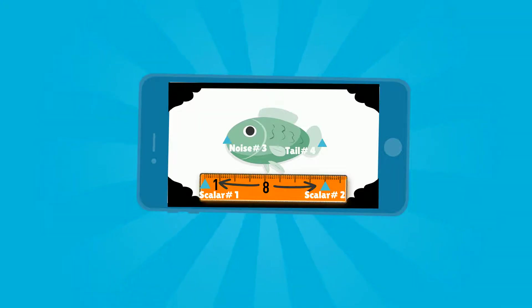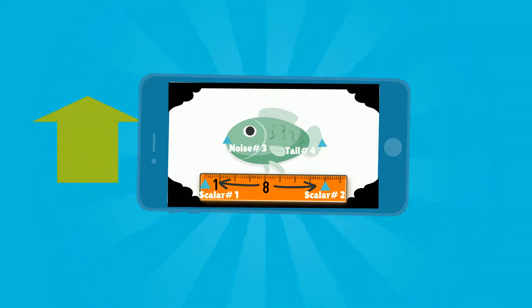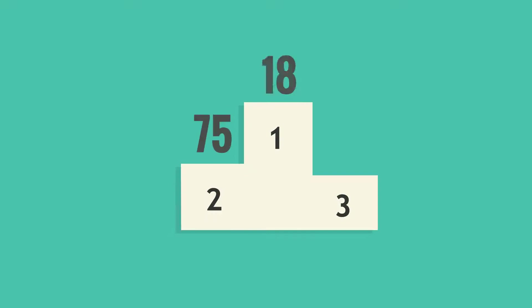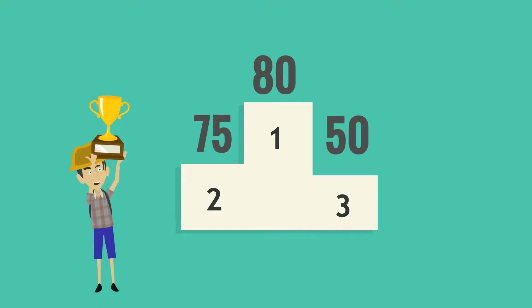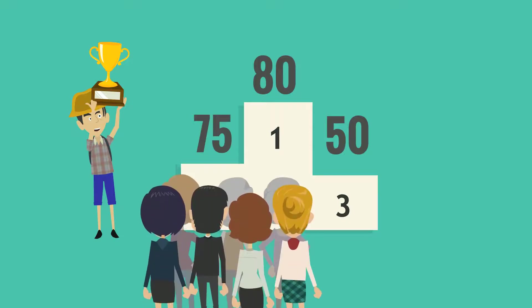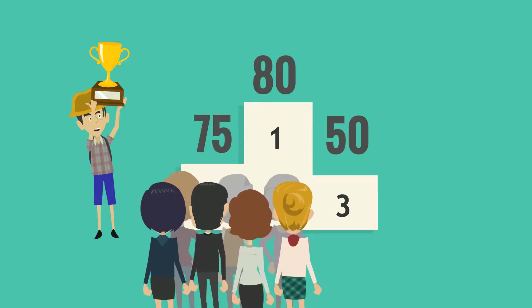iCatch app will automatically measure the length of the fish and update the leaderboard for you. You can follow the live leaderboard to see if you win. When you win, you get an award on your profile for all of your friends to see that you won the tournament.